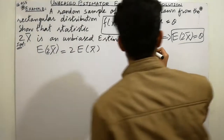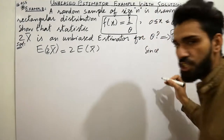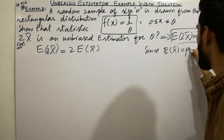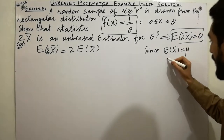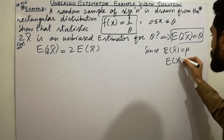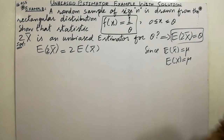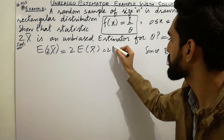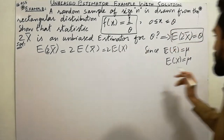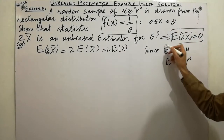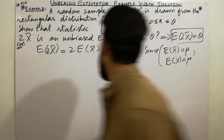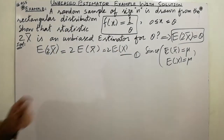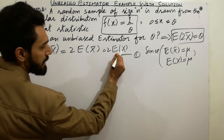As you know, expectation of x̄ is equal to mu, and expectation of x is also equal to mu, so you can write expectation of x̄ equal to expectation of x — these are equal to each other. That is the main point of this lecture. I will call this equation number 1.